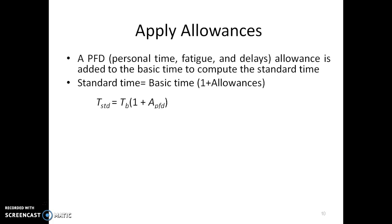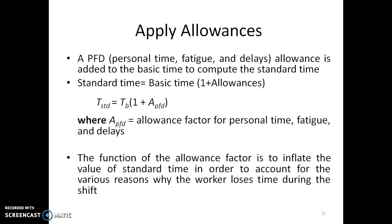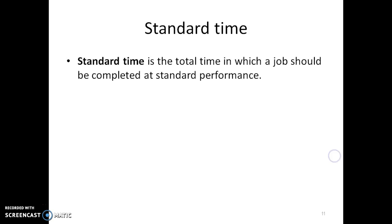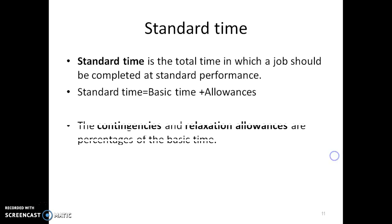Hence, standard time is obtained by adding allowances to the basic time. These allowances are percentages of basic time. Personal time, fatigue allowances, and delay allowances are some of the allowances added. The standard time is the total time in which a job should be completed at standard performance. Standard time equals basic time plus allowances.